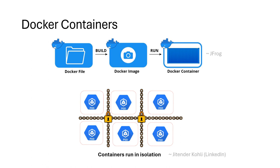Docker containers bring images to life. When an image is run, it becomes a container — a running instance of that image. Containers encapsulate your application running in isolation from other containers and the host system. This isolation ensures that your application works uniformly across different computing environments. Containers are ephemeral, easily started, stopped, moved, and deleted, embodying the run phase of the Docker lifecycle.